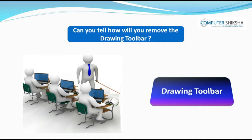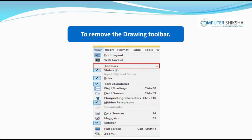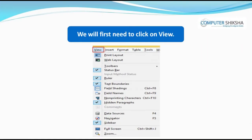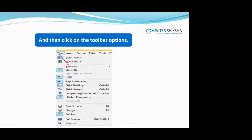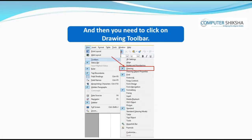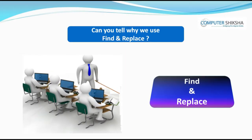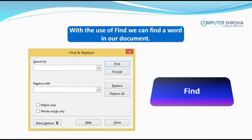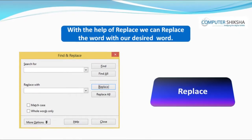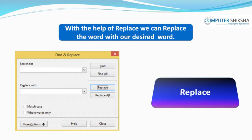Can you tell how you will remove the Drawing Toolbar? In order to remove the Drawing Toolbar, we will first need to click on View and then click on the Toolbar Options and then click on Drawing Toolbar. On doing this, the Drawing Toolbar gets removed. Can you tell why we use Find and Replace? With the use of Find, we can find a word in our document and with the help of Replace, we can replace the word with our desired word.